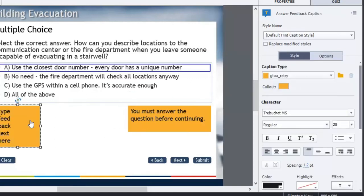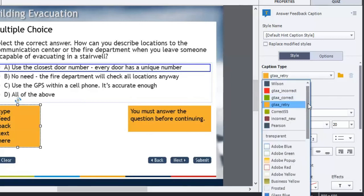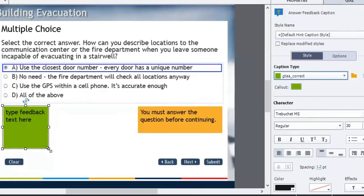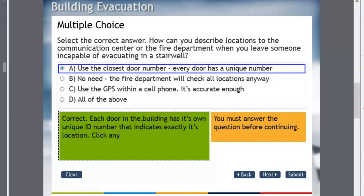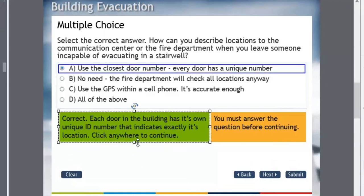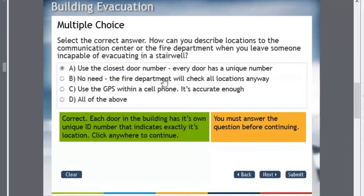We're going to show the feedback message, and when I check this off, I'll get a brand new correct answer feedback message. But unfortunately it's set up as a hint, so the caption type I'm just going to change that to my correct caption type. I'll just resize this a little bit and I will type the message that I would like learners to see when they get this question correct. So we'll say correct: each door in the building has its own unique ID number that indicates exactly its location. Click anywhere to continue. Something like that, or you could say click anywhere or press the letter Y. That works too.